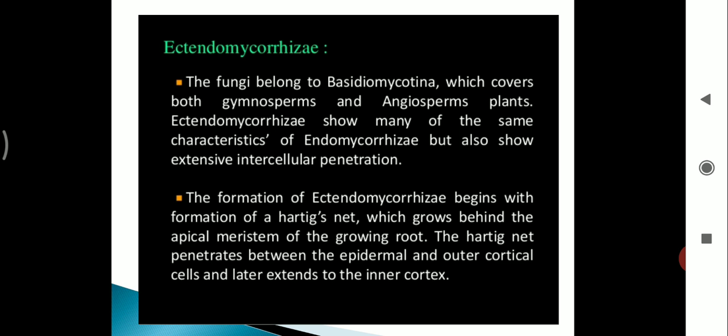Ectendomycorrhizae. The fungi belong to Basidiomycotina, which cover both gymnosperm and angiosperm plants. The ectendomycorrhizae show many of the same characteristics of endomycorrhizae but also show extensive intracellular penetrations. Hence, the formation of ectendomycorrhizae begins with the formation of a hartig net which grows behind the apical meristem of the growing root. The hartig net penetrates between the epidermal and outer cortical cells and later extends to the inner cortex.